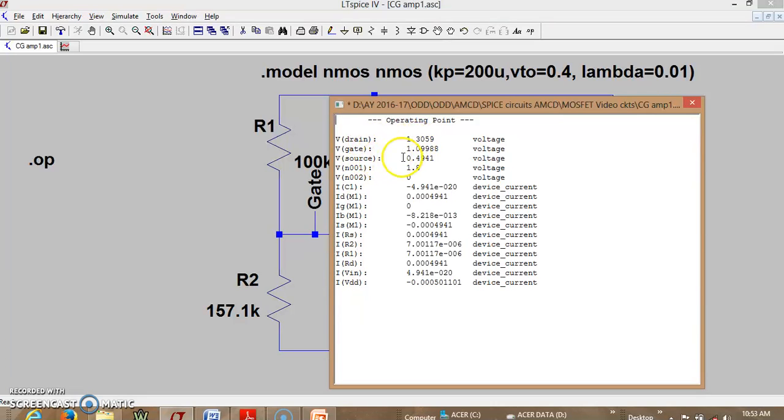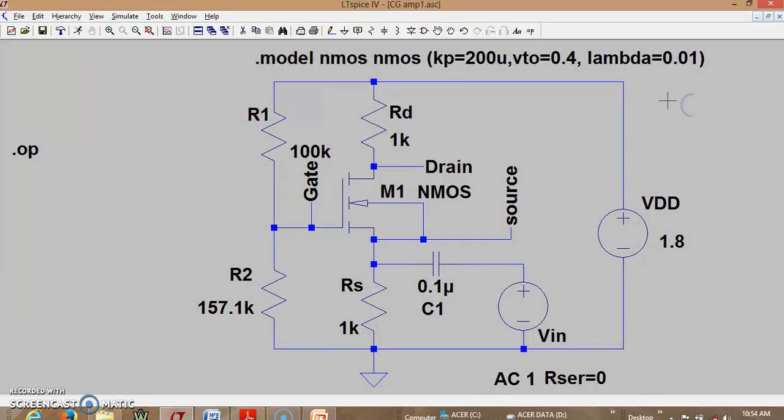So this is drain voltage 1.3 and the source voltage is almost 0.5, the VDS happens to be 0.8. So all these are almost close to our design values. So now with this proper DC conditions we can certainly go for finding the gain of the amplifier.